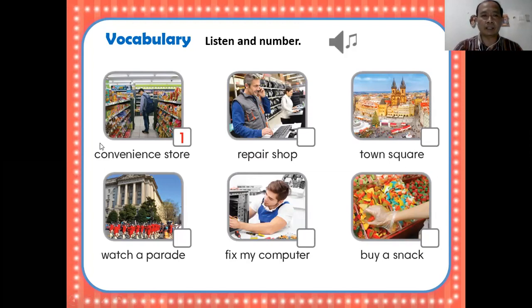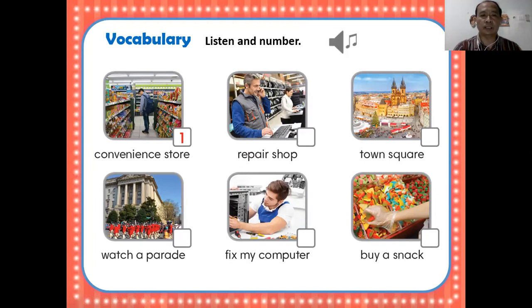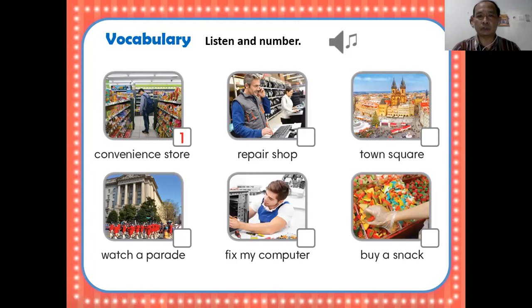Kita latihan sama-sama, kita baca pelan-pelan sebelum kita mendengarkan yang sebenarnya. Baris pertama: 'convenience store' — artinya toko serba ada. Boleh ditulis atau langsung diingat. Kemudian sebelahnya 'repair shop' — bengkel untuk reparasi, untuk memperbaiki, di sini nanti khususnya komputer.